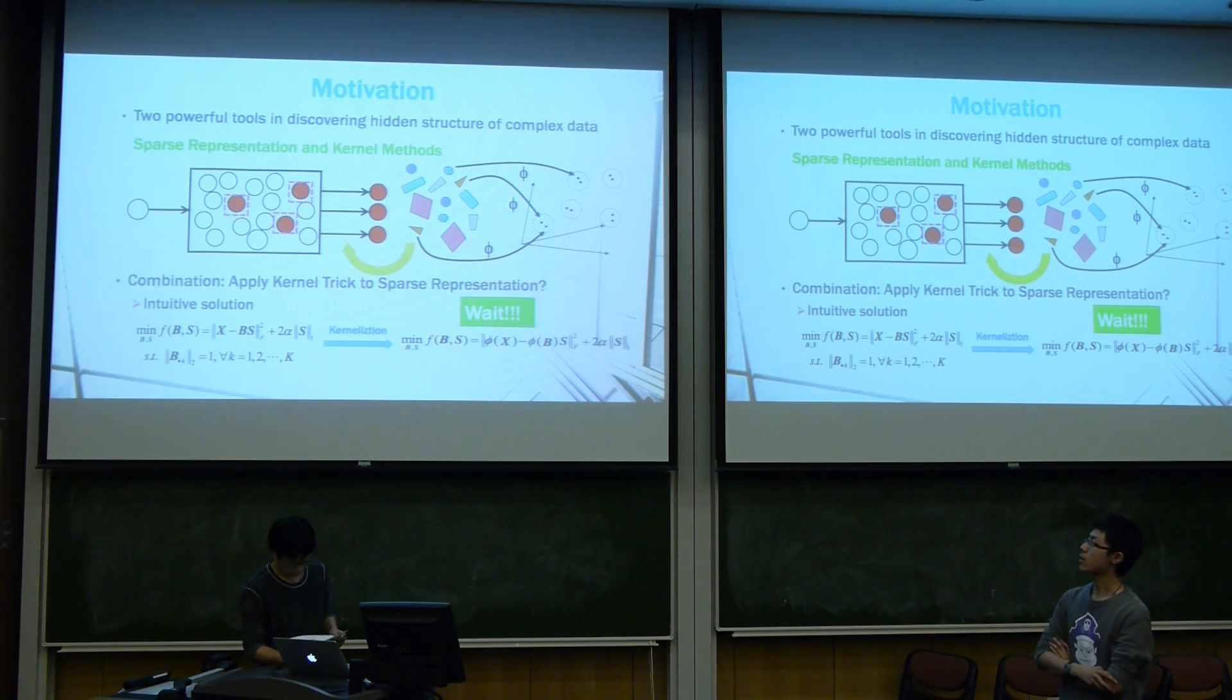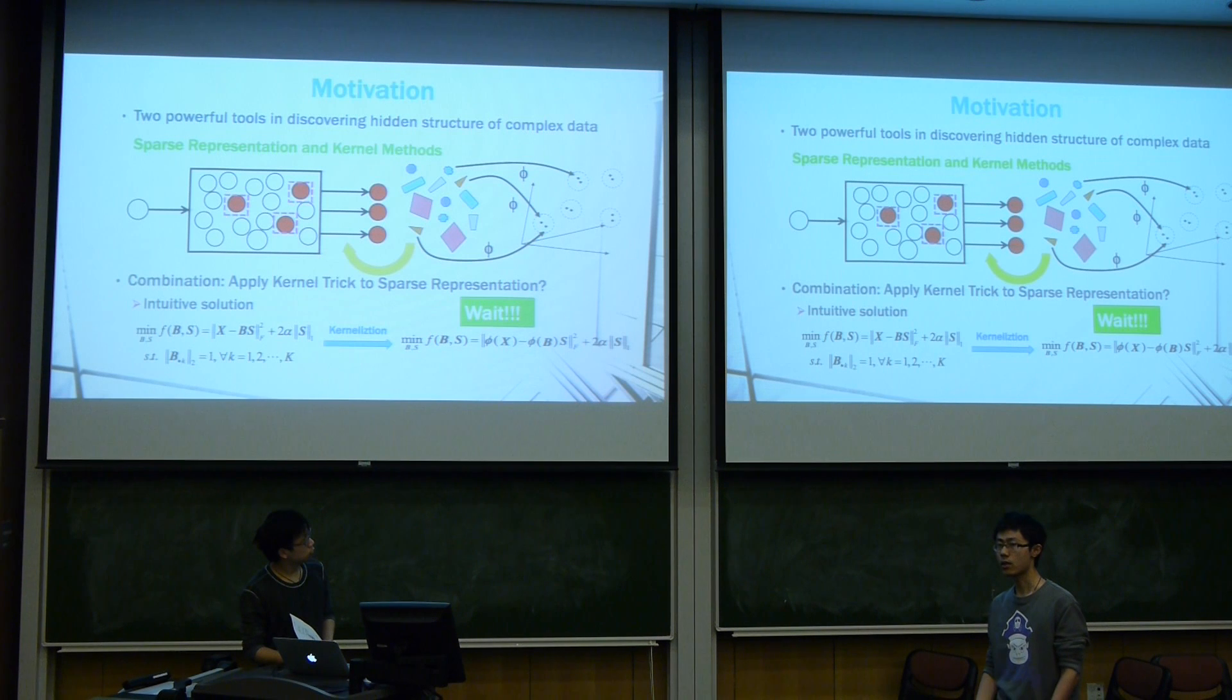An intuitive solution is using the kernel trick into the original sparse representation formulations like this one. Here X is the original input features and V is the learning dictionary. S is the corresponding sparse codes. This is intuitive but this is hard.